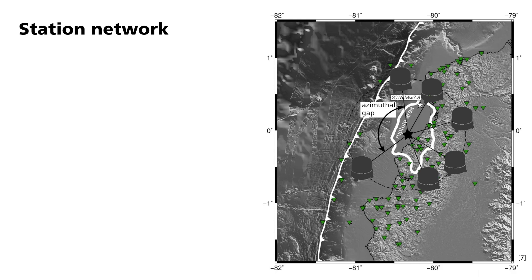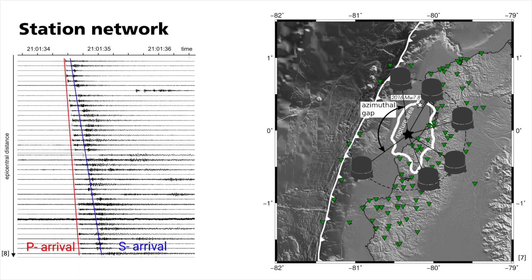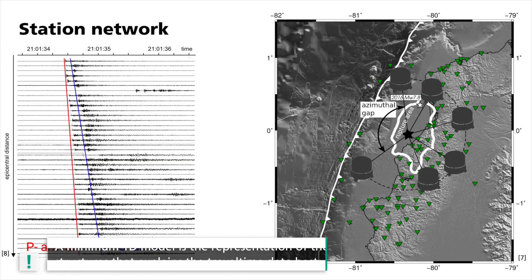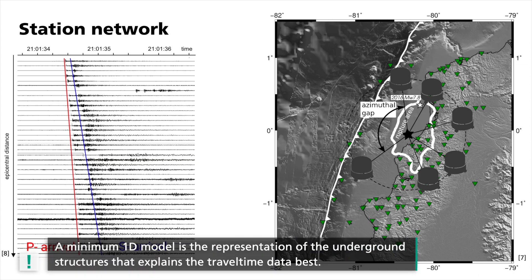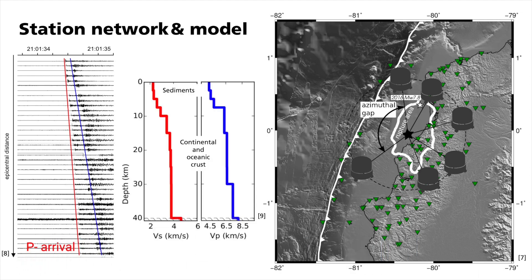This network allows us to have a lot of data in terms of phase arrival time. The P and S waves arrive later when increasing the epicentral distance. With those travel time data of more than 200 earthquakes, we invert for the earthquake hypocenter and a minimum 1D model. This model is the representation of the underground structures that best explains the travel time data. The P and S wave velocities increase with depth, with major steps at 10 and 40 kilometers. The localization procedure finds the lowest residual between observed and modeled travel time data, improving previous earthquake locations by solving the structure and localization problem simultaneously.